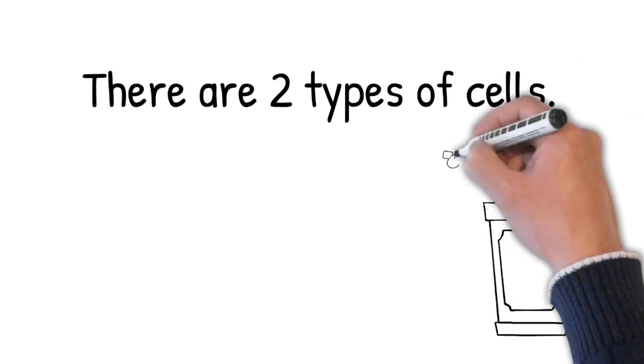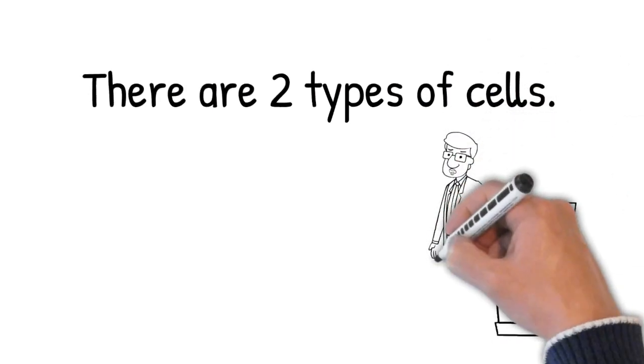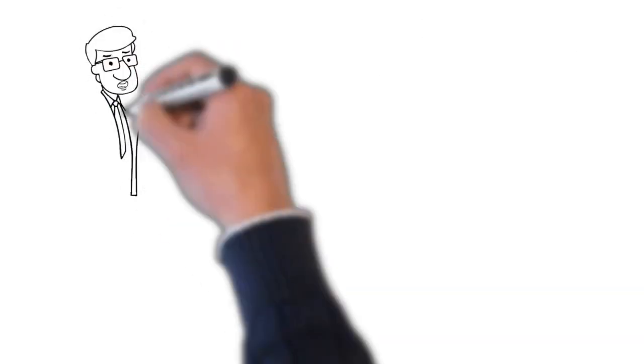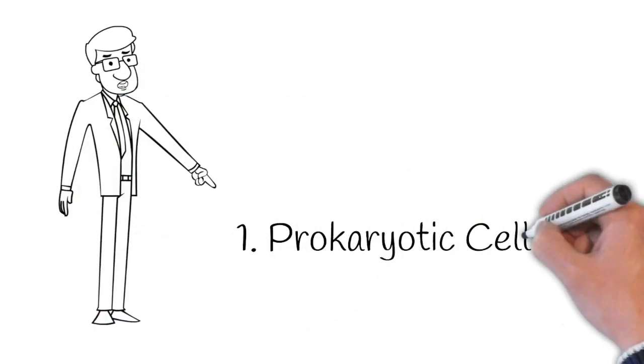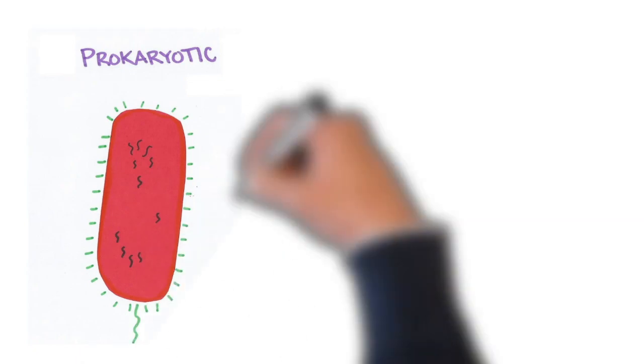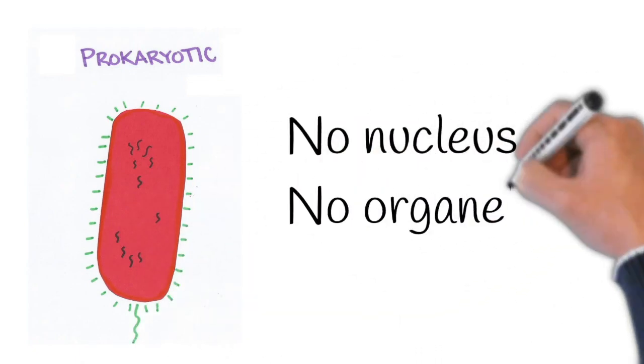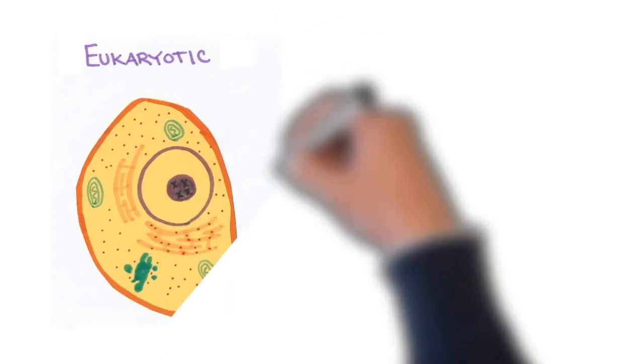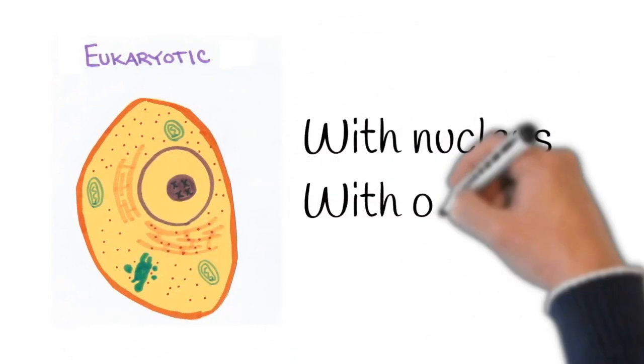Furthermore, it was explained that there were two types of cells. The prokaryotic cells and the eukaryotic cells. Prokaryotic cells have no nucleus and no membrane-bound organelles. While eukaryotic cells are those with nucleus and membrane-bound organelles.